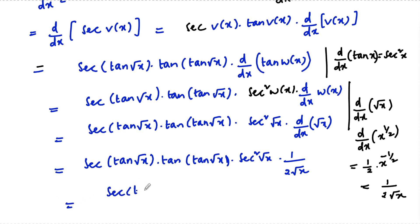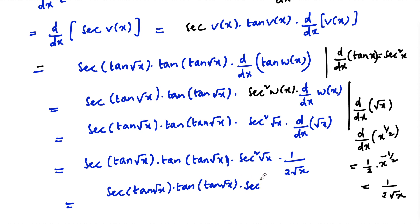So finally the answer is: secant(tan(root x)) into tan(tan(root x)) into secant squared(root x) divided by 2 root x.